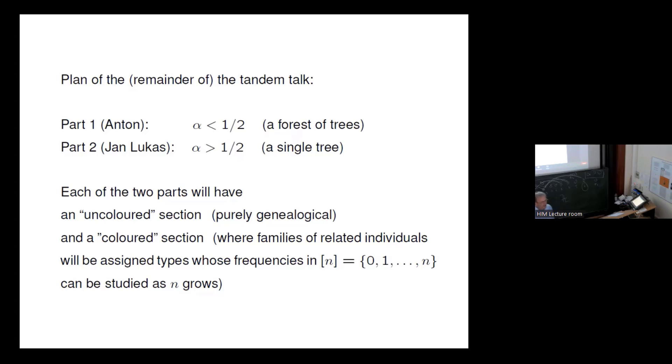Each of the two parts will have an uncolored section, purely genealogical, and a colored section, where families of related individuals will be assigned types, whose frequencies in the block zero to n can be studied as n grows. So if you like, there is a backward point of view, the genealogy, and the forward point of view, which is the evolution of type frequencies. And we have to define what is a family when you have just a single tree. That will be in the second part. But in the Wright-Fisher case, if you go back to time minus infinity, everybody is related with everybody at generation zero. And still you can say you start out with everybody its own family, and you look in the future, and that will be done in the second half of the second part.